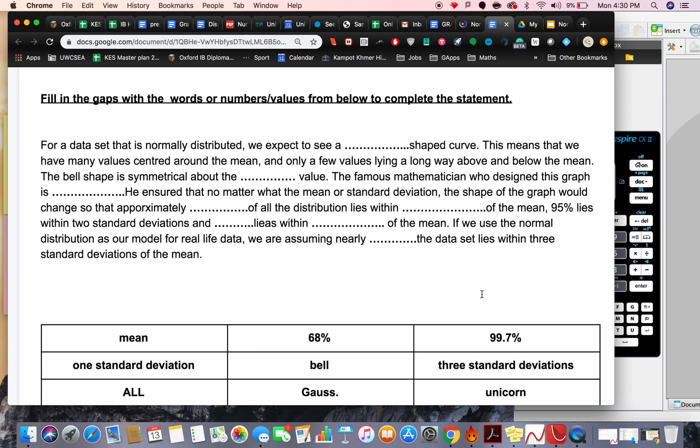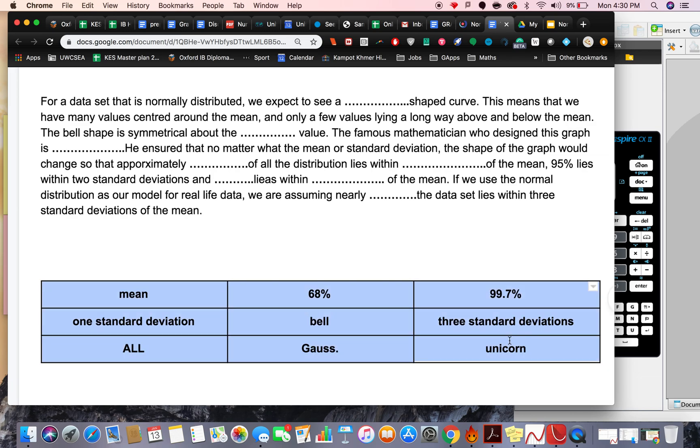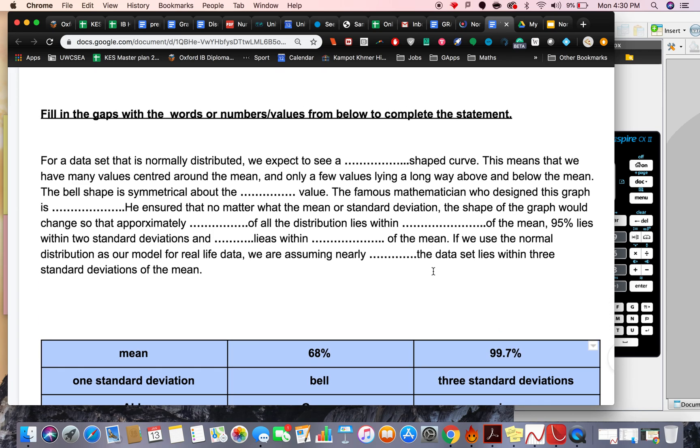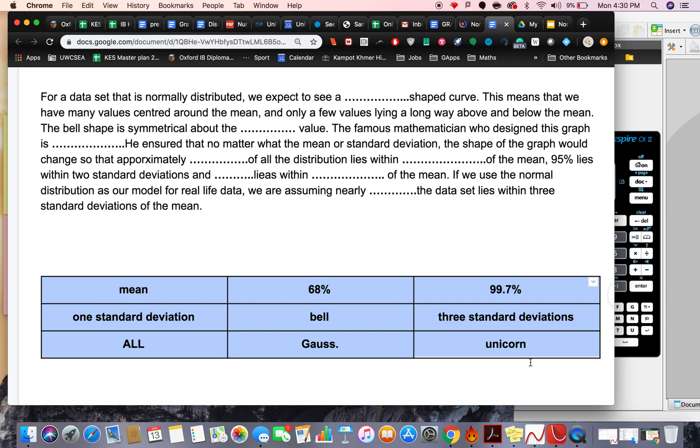Once you've done that, you're going to choose from these 9 words. You're going to choose 8 of them to fit into the gaps. And one of them is a bit of a bogus word. Okay, so let's see how we get on with that.